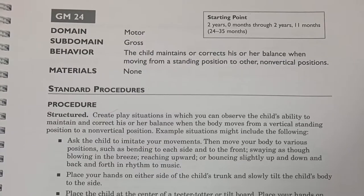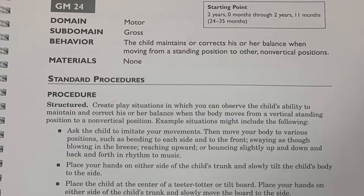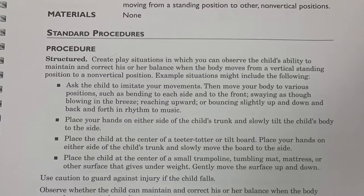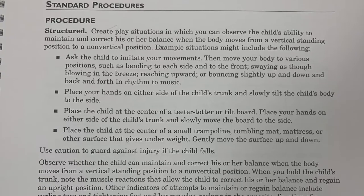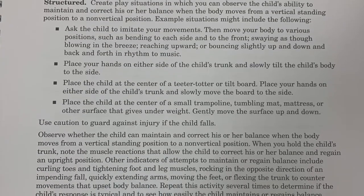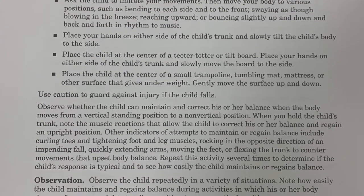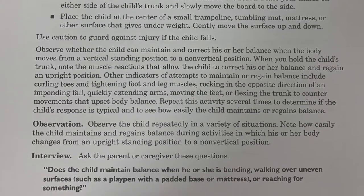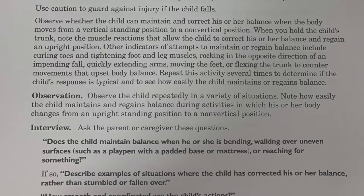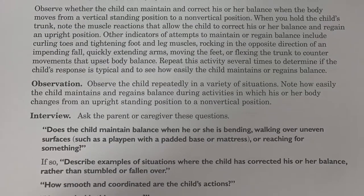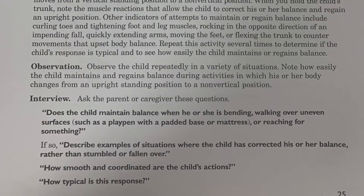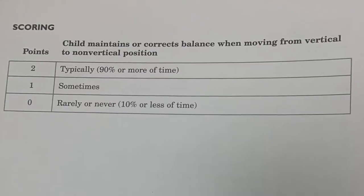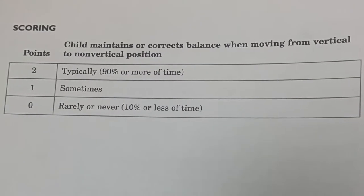You can do this in a structured clinical setting, or complete this by observation at home. In interview style, ask the parent or caregiver: Does the child maintain balance when bending, walking over uneven surfaces such as a playpen, or reaching for something? Describe examples of situations where the child has corrected his or her balance rather than stumbled or fallen. How smooth and coordinated are the child's actions? How typical is this response?